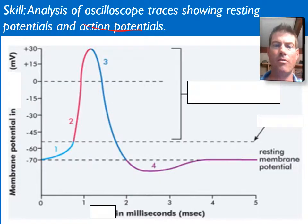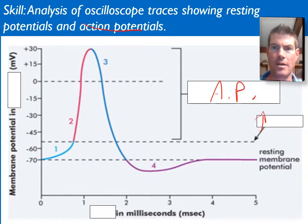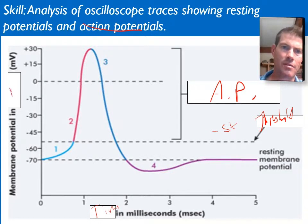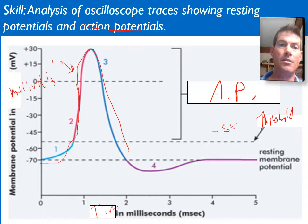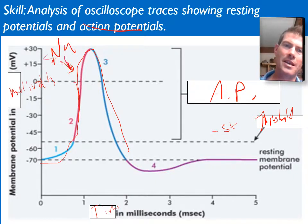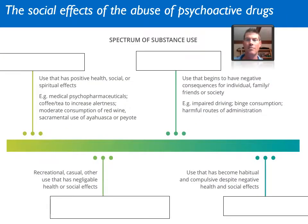Here on the oscilloscope we can see the action potential. The threshold is at negative 55 mV, and the x-axis shows time in milliseconds while the y-axis shows millivolts. Sodium is rushing in on the rising phase, and potassium is going out during repolarization.